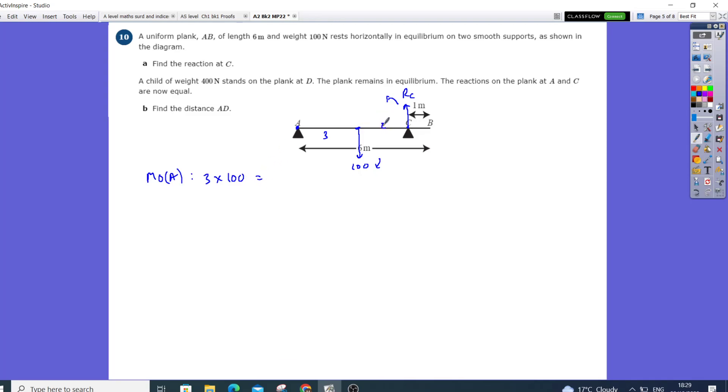the distance there will be 2 plus 1 will be 3, so that's 5 from A. 5 times RC, so that will be RC equals 300 divided by 5, which will give me 16 newtons.